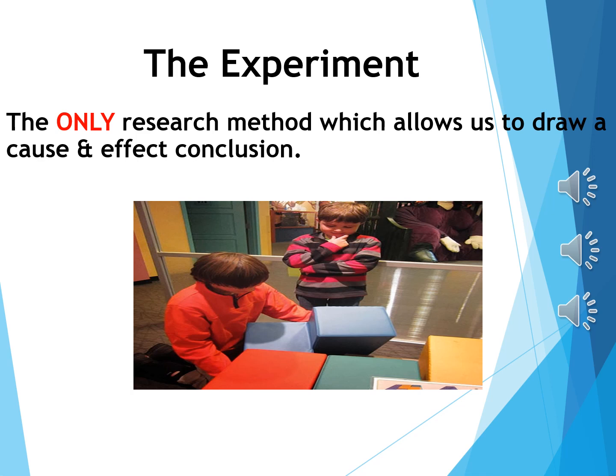Let's now consider the experiment. We're really not supposed to have a favorite research method, like people are not supposed to have a favorite child — but in this case I think it's okay. This is our favorite research method because it is the only research method — note the caps, meaning it's highly important — that allows us to draw cause and effect conclusions: to say this thing causes the other to happen. In a correlational study you can do prediction, but you can't conclude that one variable is causing another.